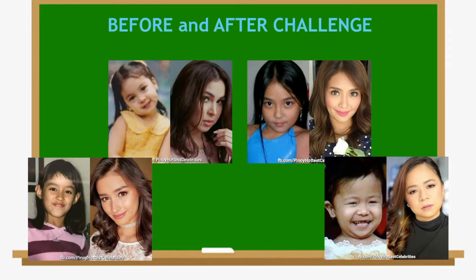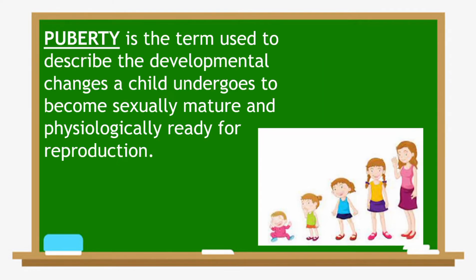These are famous actresses with their before and after photo challenge. Puberty is the term used to describe the developmental changes a child undergoes to become sexually mature and physiologically ready for reproduction. It normally begins between the ages of 8 to 14 years old in females and between the ages of 10 to 16 years old in males.